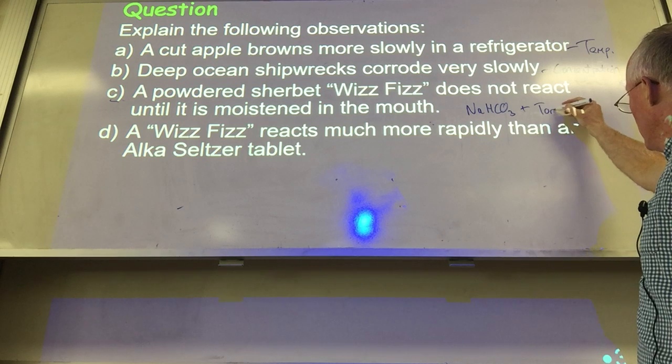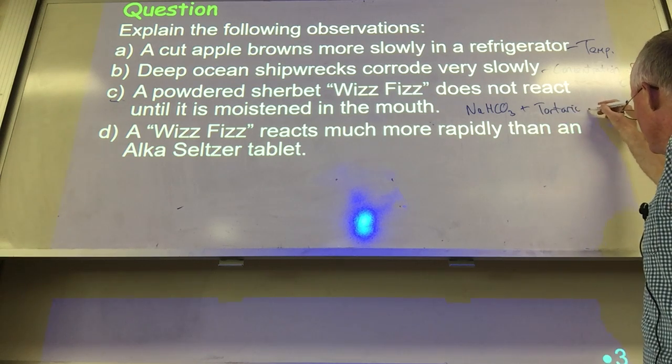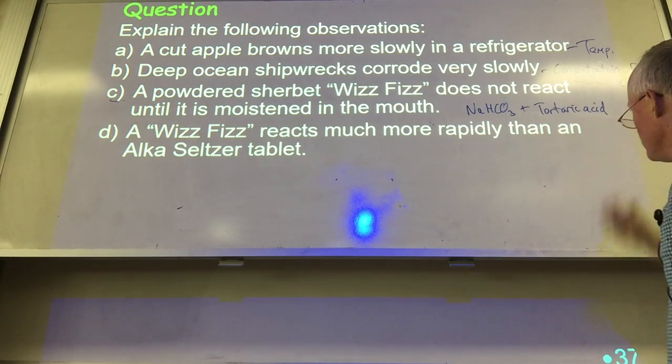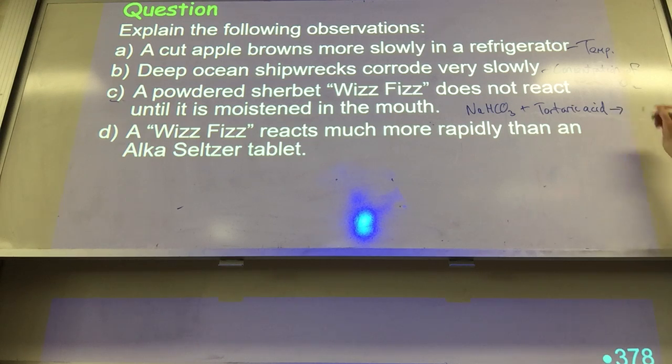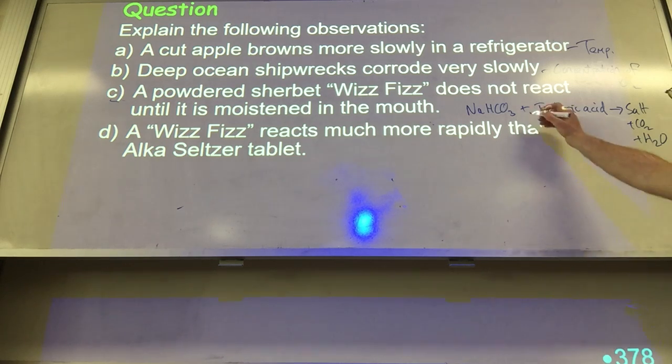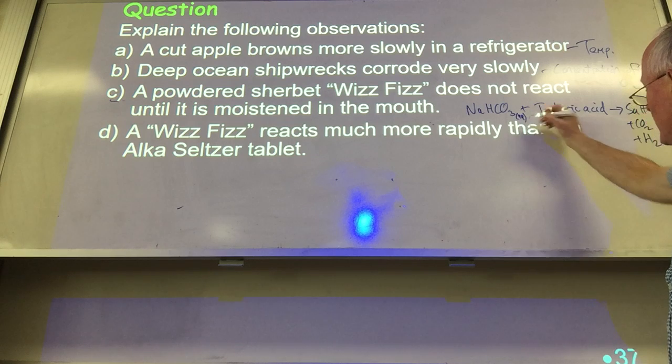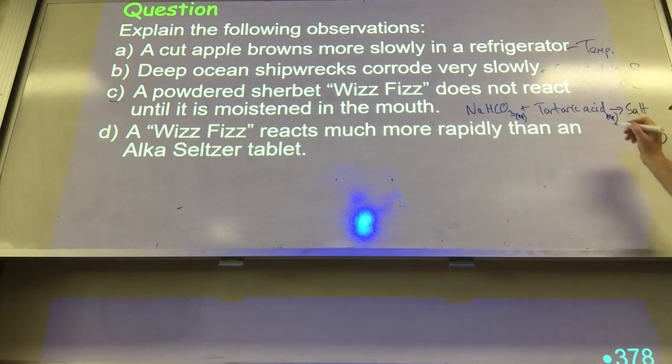And that reacts: acid plus carbonate gives salt plus carbon dioxide plus water. The carbon dioxide is what makes it fizz. Now, what we need for this reaction to happen - these need to be aqueous. Why do these need to be aqueous? What has to happen for a reaction to occur? Collisions have to occur.